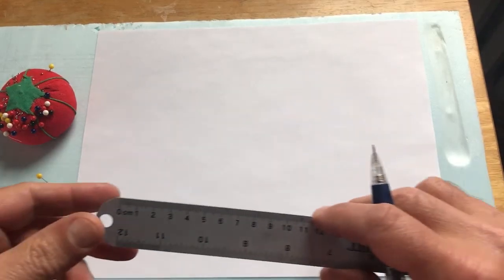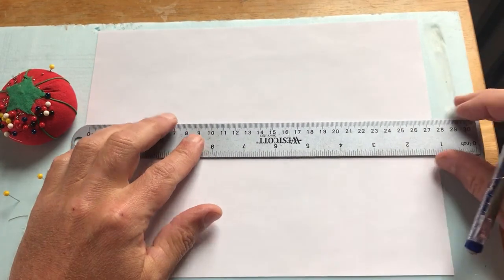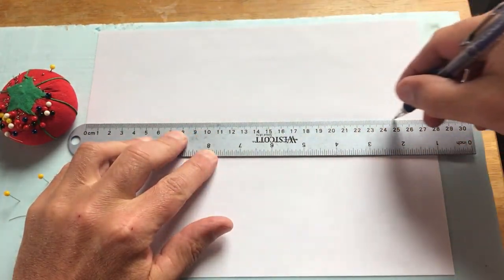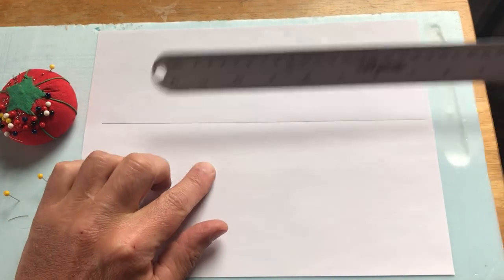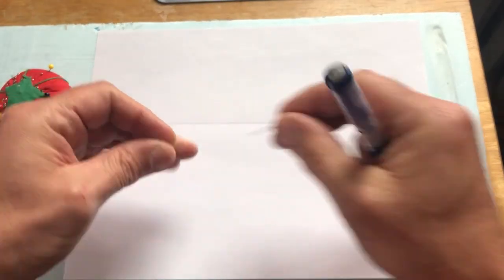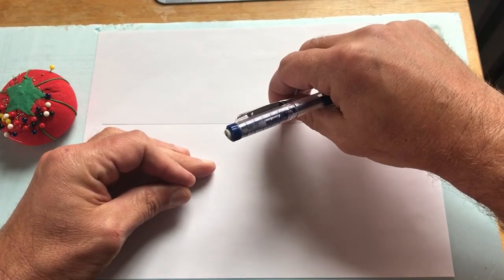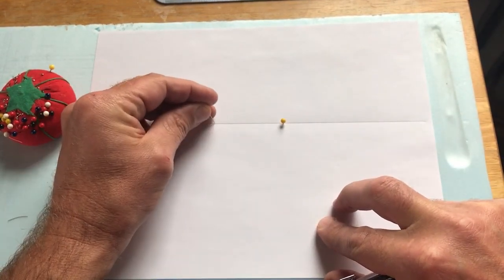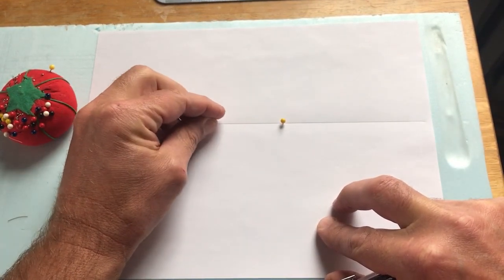Let's see if we can draw an ellipse. I'm going to start just by drawing a line right through the center of my page, and we're going to identify two points. Now I'm using a piece of foam here so that I can place a pin at one spot and a pin at another spot along that line.